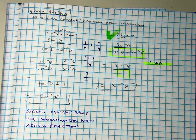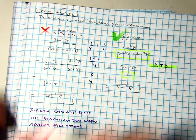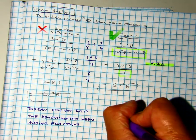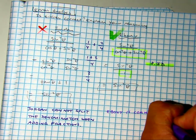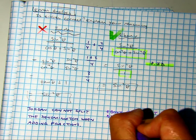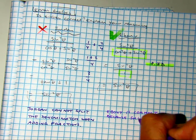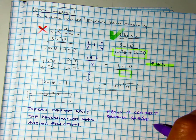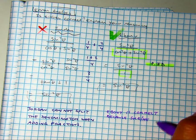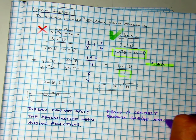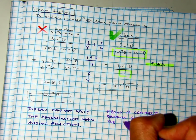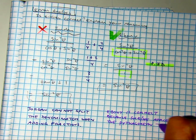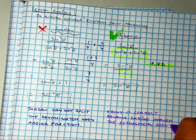So, let's put a big red mark. Let's write a sentence for Ebony. Ebony is correct, because she or he, they? And applied the Pythagorean identity correctly.